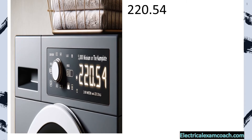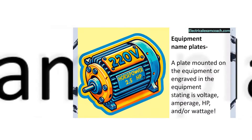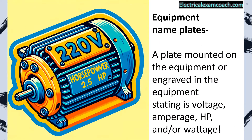Section 220.54 lets us know that dryers must be calculated at a 5,000 VA minimum or the nameplate rating, whichever is greater. An equipment nameplate is a plate mounted on or engraved in the equipment stating its voltage, amperage, horsepower, and/or wattage. It may only have a few of these, but as we've learned in previous lessons, we can apply Ohm's law to find the unknown.